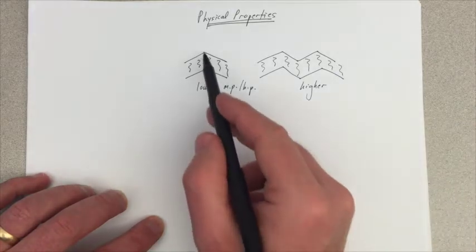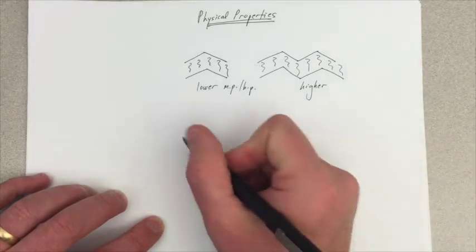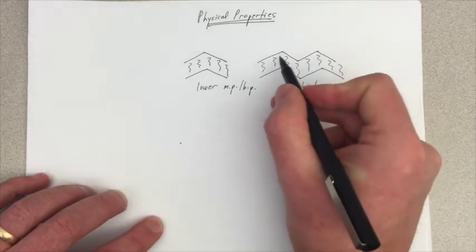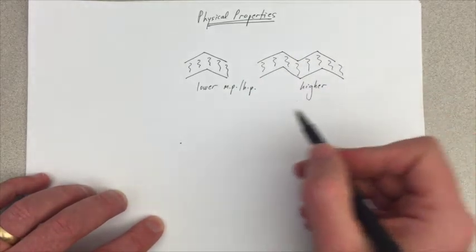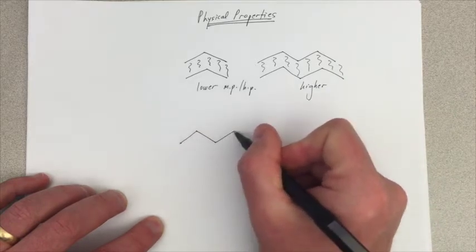When we think further about alkanes, we might think about, what if they aren't just our normal version, our n-version of these, unbranched, but what if we introduce some branches to this?